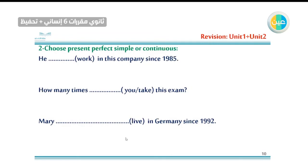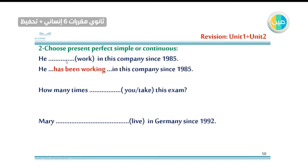'He work in this company since 1985.' Are we talking about the result or the duration? Since 1985 — duration. So we go with present perfect continuous. He + has + been + verb with -ING. He has been working in this company since 1985.